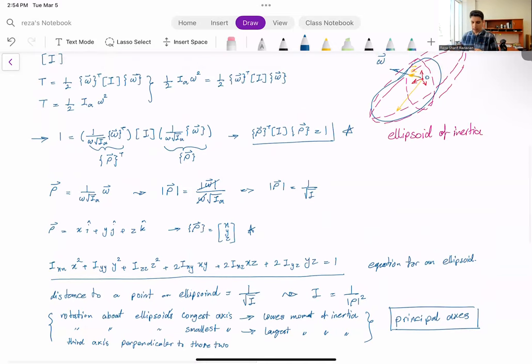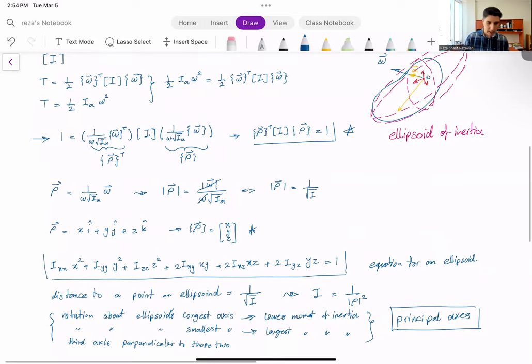And one other thing I wanted to mention is that although we came up with the equation for this ellipsoid, given the particular values of I_xx, I_xy, and so on, and these are dependent on what kind of frame we look at. So if I changed my frame, these values change. But this ellipsoid of inertia is fixed to the body. It doesn't matter how you're changing your body fixed frame, how you place it on the body. The ellipsoid of inertia remains fixed to the body and it always moves with the body.